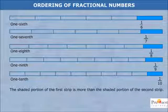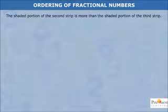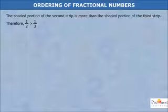The shaded portion of the first strip is more than the shaded portion of the second strip. Therefore, 1 is greater than 1/2. The shaded portion of the second strip is more than the shaded portion of the third strip. Therefore, 1/2 is greater than 1/3.